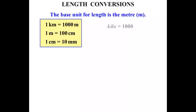The word kilo equals one thousand, so a kilometer is a thousand meters. The word milli means one thousandth, so a millimeter is one thousandth of a meter.